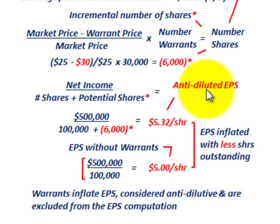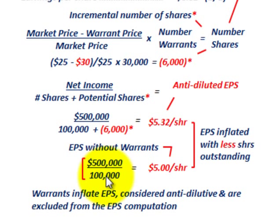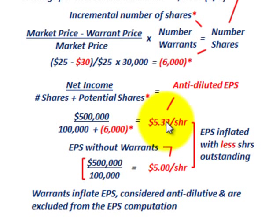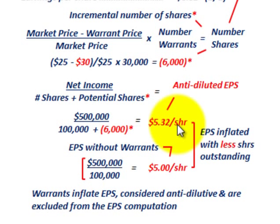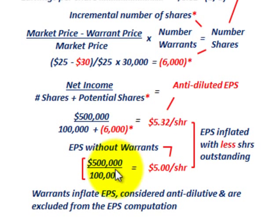To confirm this is anti-dilutive, we compare to the earnings per share without those warrants. Without the warrants: net income of $500,000 divided by the average 100,000 shares outstanding equals $5.00 per share. Comparing that to $5.32 per share when we include the warrant shares — the warrants reduced the number of shares outstanding by 6,000, which increased earnings per share from $5.00 to $5.32. That increase is what makes this anti-dilutive.